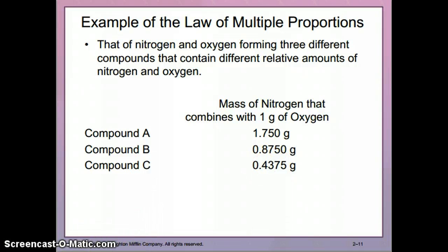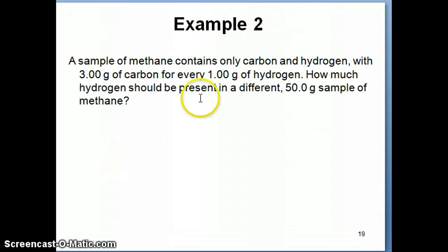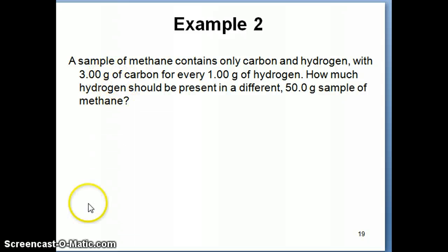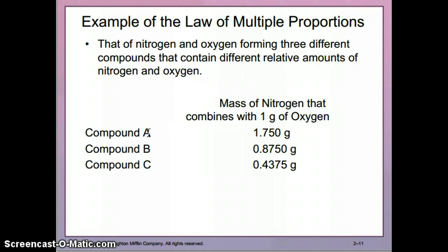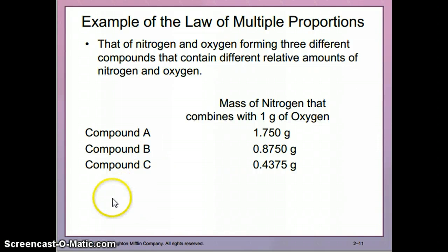This is similar to the previous methane example, where for every 1 gram of hydrogen we had 3 grams of carbon. Another compound like ethane would have a different mass of carbon per gram of hydrogen. For 1 gram of oxygen, all three nitrogen-oxygen compounds have different masses of nitrogen — so clearly they are not the same compound. The law of definite proportion says that if they were the same compound, the amount of nitrogen would be identical.